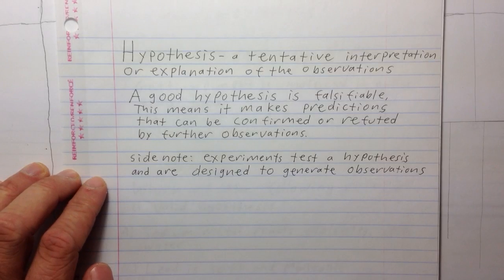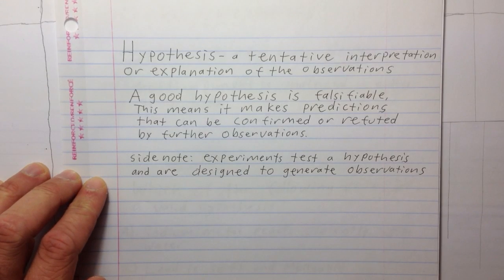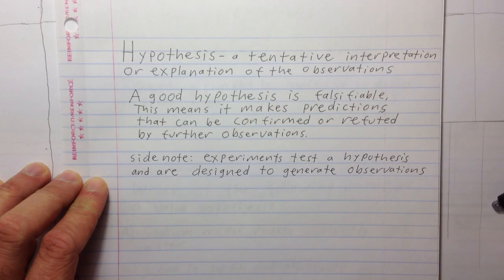A hypothesis is a tentative interpretation or explanation of the observations. A good hypothesis is falsifiable. This means it makes predictions that can be confirmed or refuted by further observations.